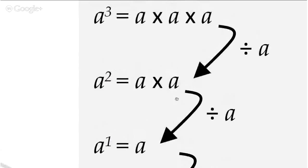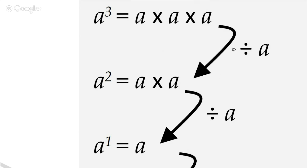In a similar way, we know a to the power one has got to be a, because a to the power one just means we have one of those a's rather than two or three. So we accept that a to the power one has got to be a. And also to get from this level down to this level, again you have to divide by a. So that's just to help you appreciate that to get from one level to the next, you have to divide by a.